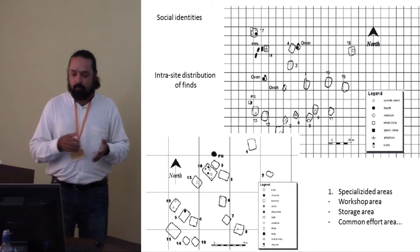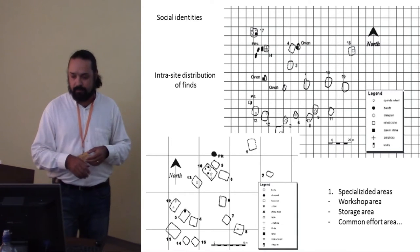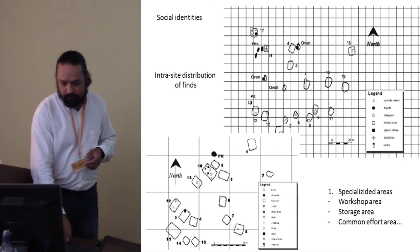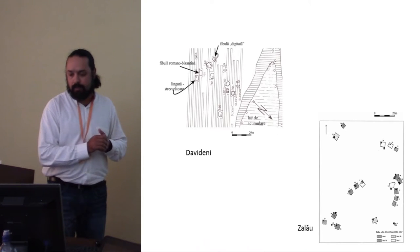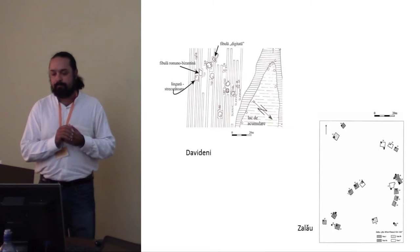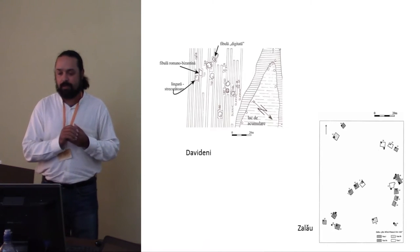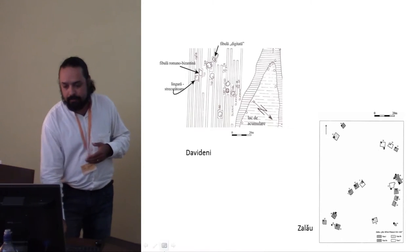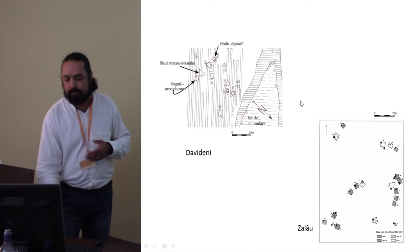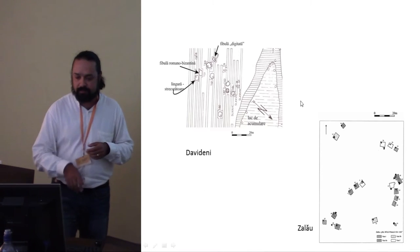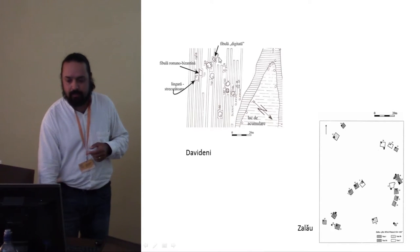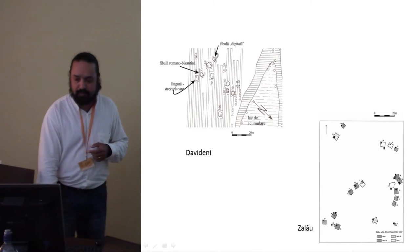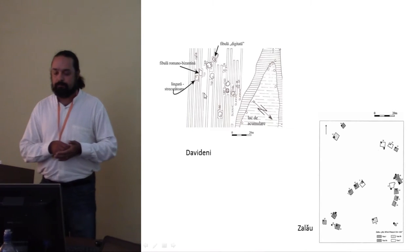So can be workshop areas, storage areas where the pits are, and so-called common effort area, the space between the structures. Here it's another example of this kind of analysis. Here it's a detail from that huge settlement that I showed before, where it's a digital fibula, here a Roman Byzantine fibula with band stem and spoon with many holes.